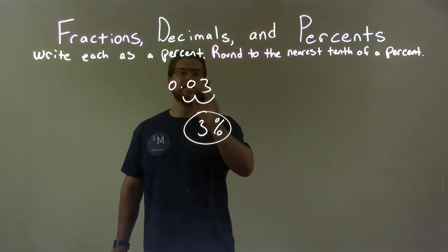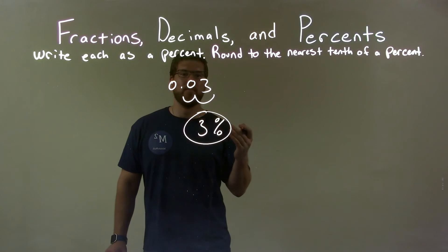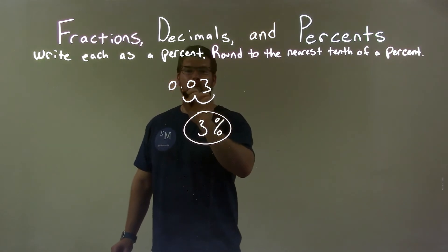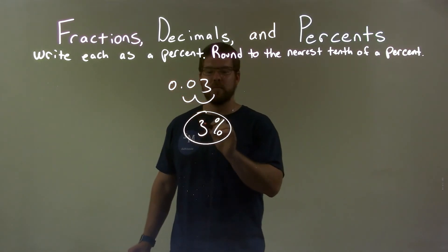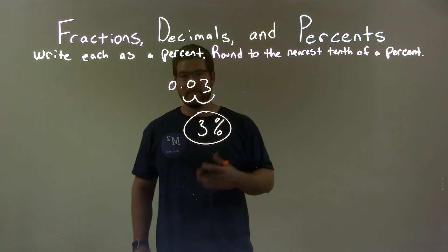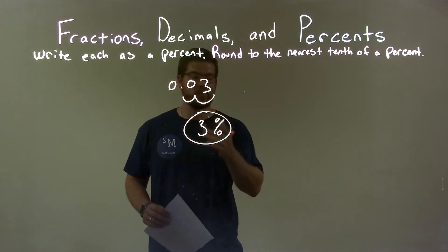Quick recap: we're given 0.03 and we need to write that as a percent. I take the decimal, I move it two spots to the right, which gives me a 3, put on a percent, and then we're done. Our final answer: 3%.